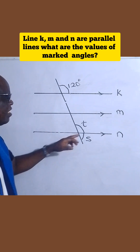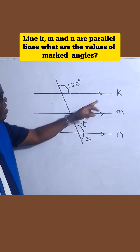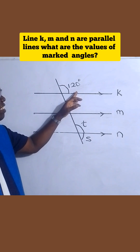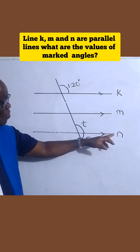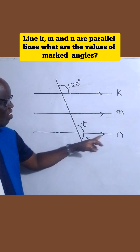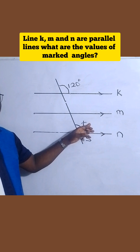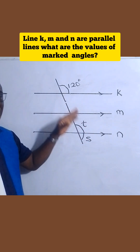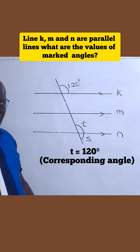Now let's look at T first. Let's find T. Look at line K — the angle above this line is 120 degrees. Then look at line N also — the angle above is also 120 degrees. So T is equal to 120 degrees. And that's what we call a corresponding angle.